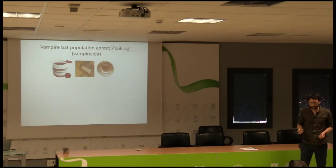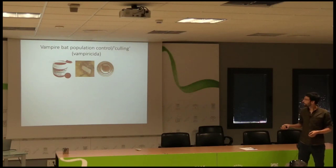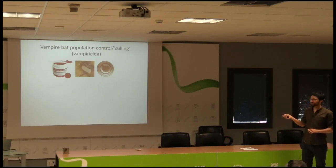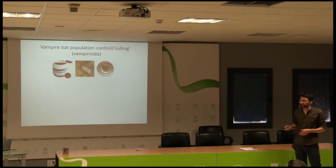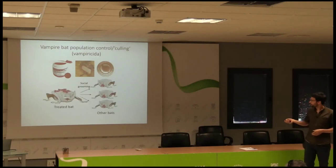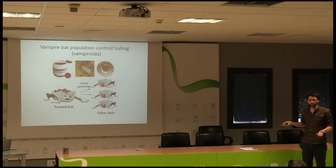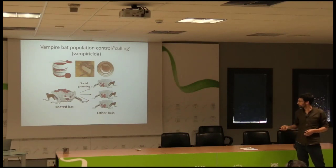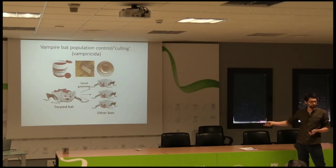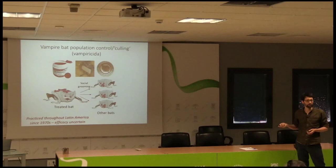How do people actually go about trying to control this disease? One of the ways is using population control of the bats. There's a very clever transmissible poison called vampiricide — an anticoagulant poison. You go out, catch bats, smear this poison on them, and because these bats are highly social and groom each other, other bats ingest the poison off the first one and all of them die. That has been done throughout Latin America since the 1970s, but there's really no clear evidence yet that it's actually working to reduce rabies transmission.